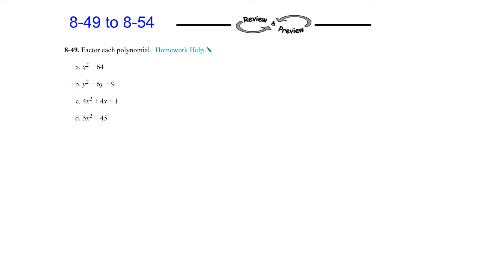Question 49, factor the following polynomials. On part A, we have x squared minus 64. This is a difference of squares, so we don't need to do the generic rectangle if we remember the pattern. We have x minus 8 and x plus 8. Remember with a difference of squares, each one of these terms need to be a perfect square, which means if you take the square root, you get a nice number back. Same thing with 64, the square root of 64 is 8, and that's where those two terms come from in your binomial.